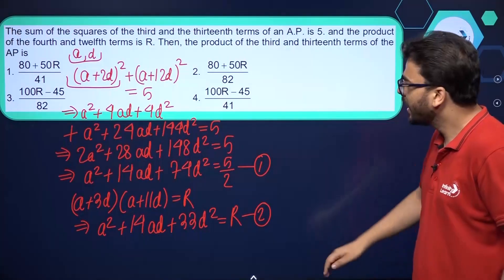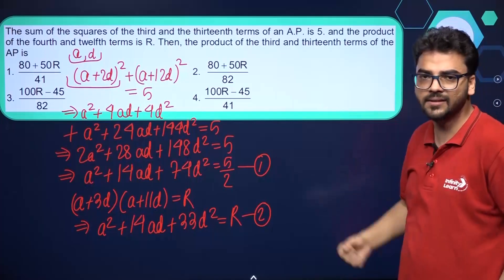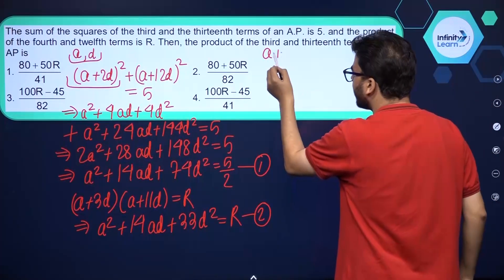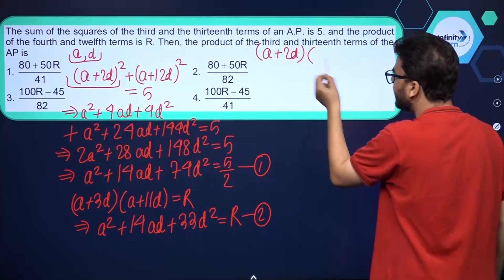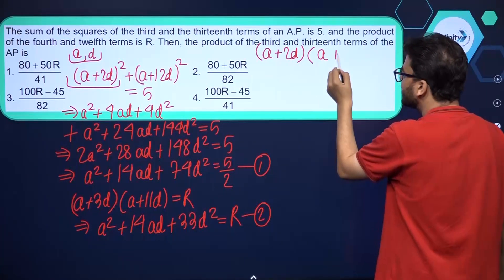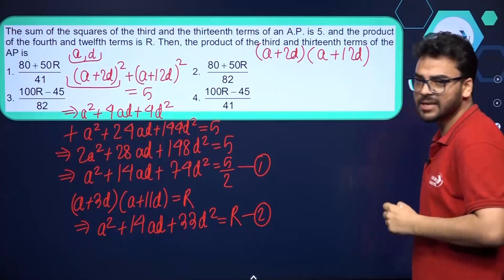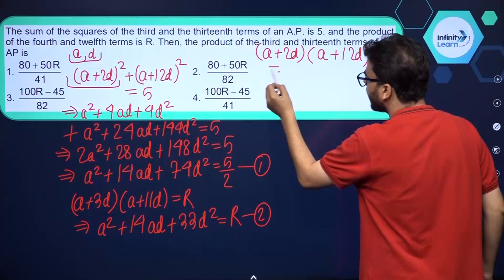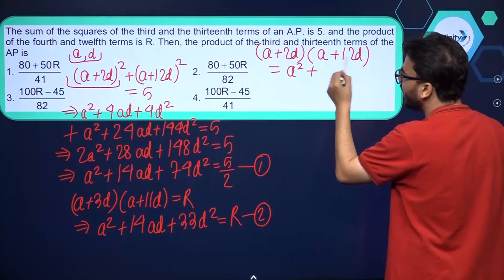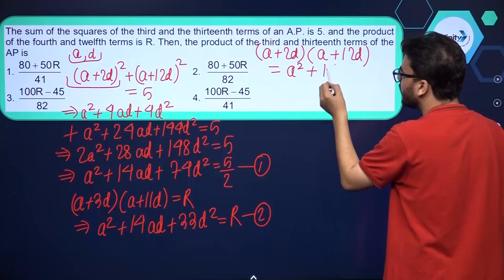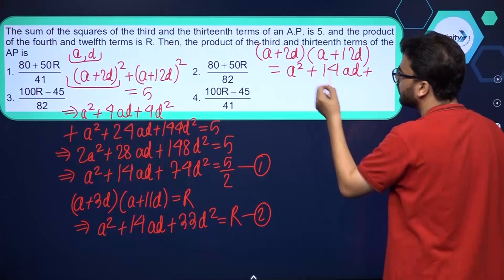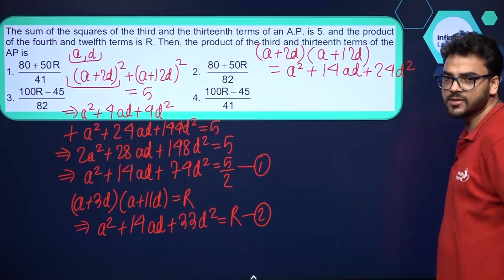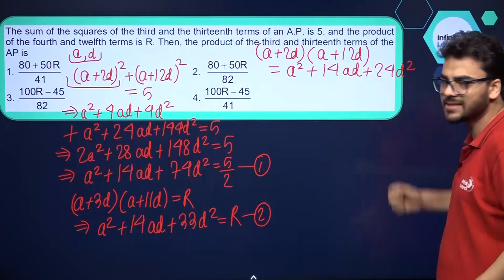Now we have to find the product of the 3rd and 13th terms. The 3rd term is A + 2D and the 13th term is A + 12D. Expanding: A² + 12AD + 2AD + 24D² = A² + 14AD + 24D². So we need to find the value of this expression.